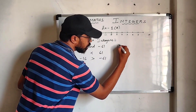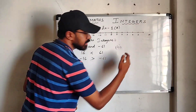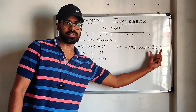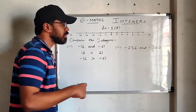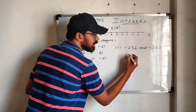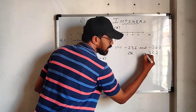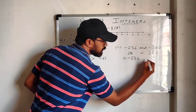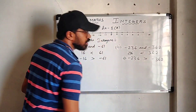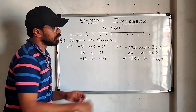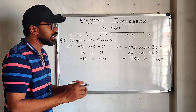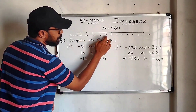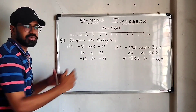Another example: compare minus 236 and minus 362. Both are negative integers. Forget the minus sign and compare only 236 and 362. Clearly 362 is bigger, but since the question is in negative, that means minus 236 is the bigger number. For a positive versus negative example: comparing 4 and minus 2 — clearly 4 is greater. Comparing minus 1 and minus 4 — minus 1 is greater. That is how you compare integers.